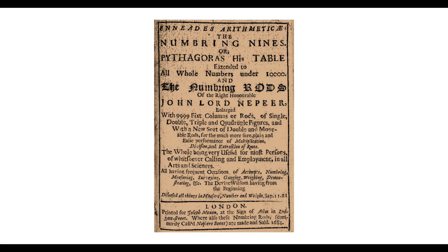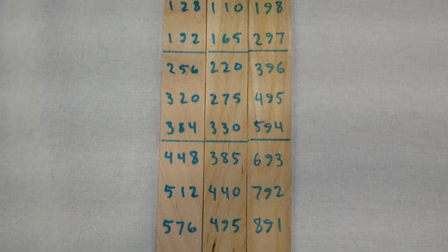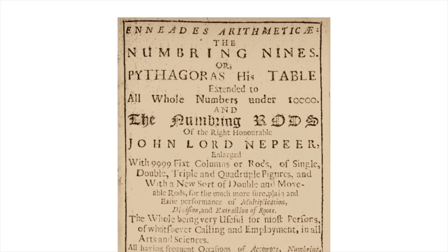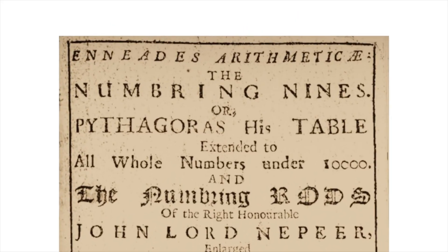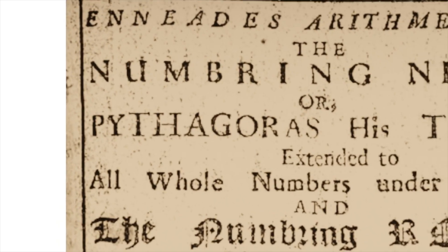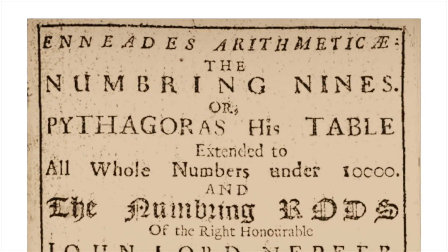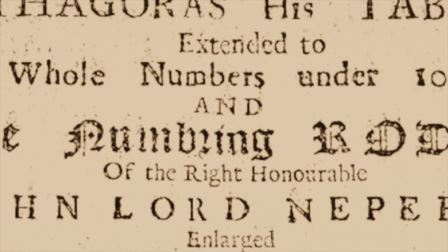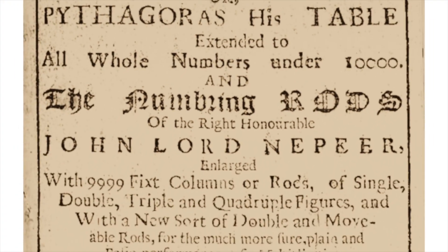The numbering nines was the title of a short book published in 1684 in London. Actually, the full title was Eniades Arithmeticae, the numbering nines, or Pythagoras. His table extended to all whole numbers under 10,000, and the numbering rods of the Right Honorable John Lord Napier.